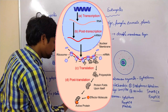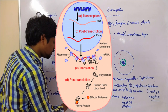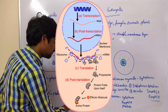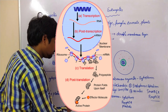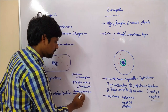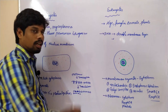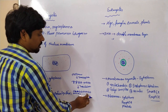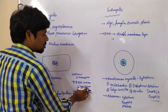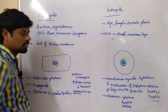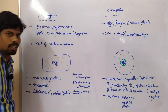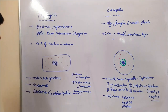Different amino acids together form the protein structure through the process of translation with the help of ribosomes. This is the function of ribosomes.